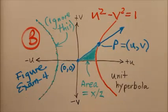But again, u squared minus v squared equals one is the equation of the unit hyperbola. That is choice B.